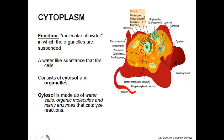The cytosol, the liquid part, has all sorts of different stuff in it. It has water, salts, organic molecules — so we're talking carbs, proteins, lipids, things like that — and also lots of enzymes that help reactions to happen in the cytoplasm.